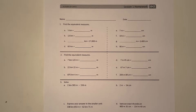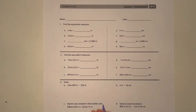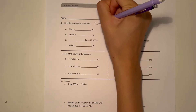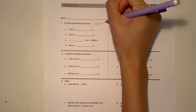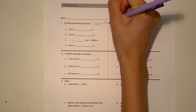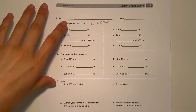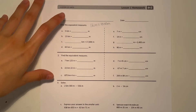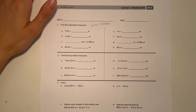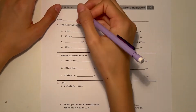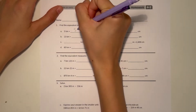Number 1, find the equivalent measures. So 5 kilometers to meters. We know that 1 kilometer equals 1,000 meters, so we're going from big to small in A. To get our answer, we multiply. So 5 times 1,000 is 5,000 meters.